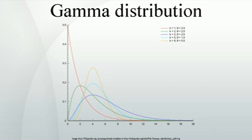The gamma distribution is the maximum entropy probability distribution for a random variable x for which E[x] equals k theta equals alpha over b is fixed and greater than 0, and E[ln(x) - psi(k) - ln(theta)] equals psi(alpha) - ln(b) is fixed, where psi is the digamma function.